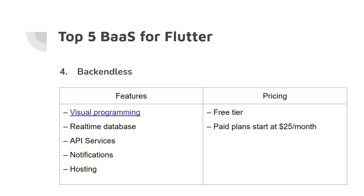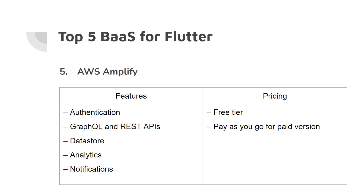The paid plan starts at 25 dollars per month. The last one is AWS Amplify. This is another back-end as a service platform and one of the widely used platforms today. AWS offers secure and fast development for users, with fast access to resources and advanced functionality. It offers authentication, GraphQL, REST APIs, data store, analytics, and notifications. It starts with a free tier plan and then pay-as-you-go for the paid version.